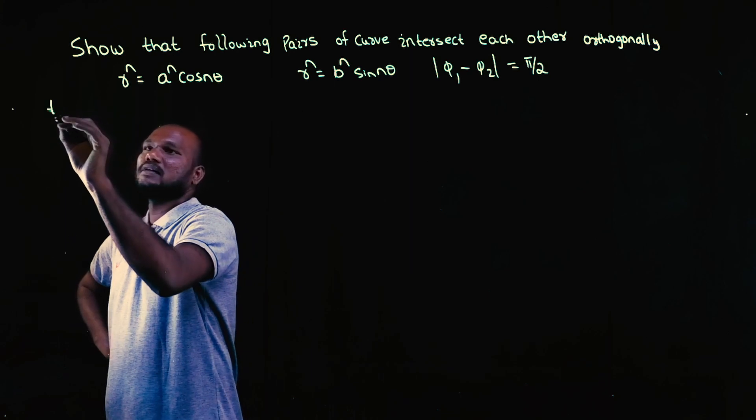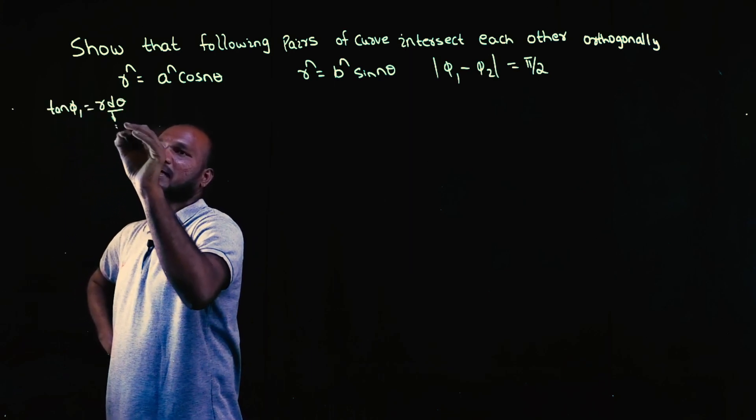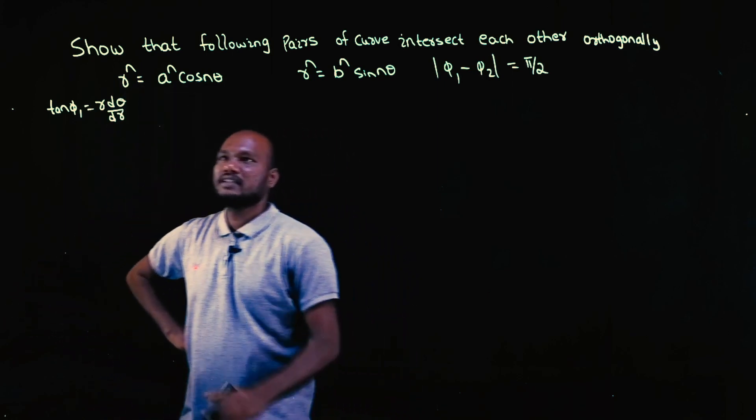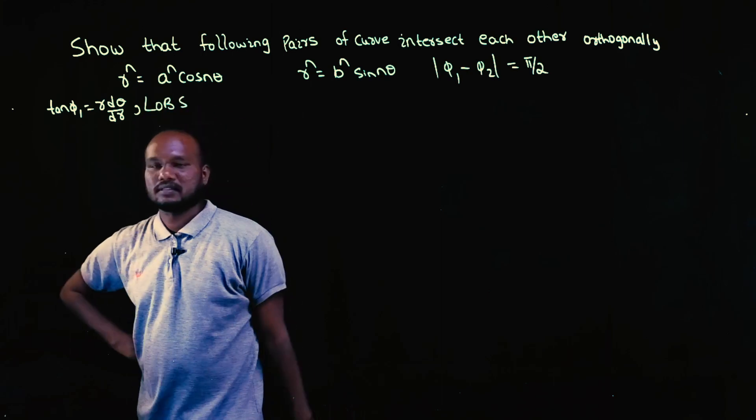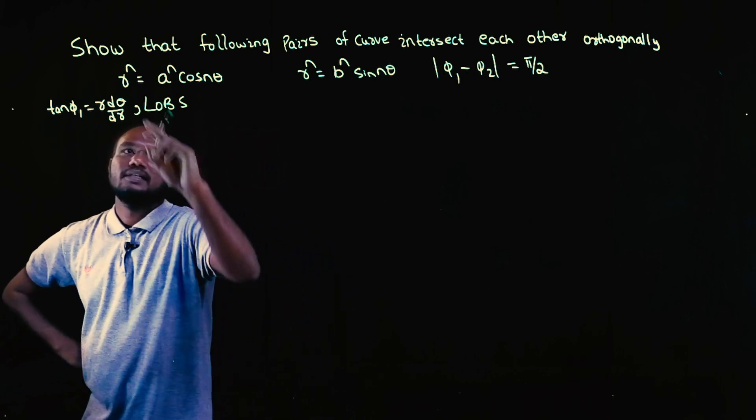What is the formula? Tan phi 1 is equal to r into d theta by dr. R directly is not given. Whenever r is not directly given, what we need to do? L.O.B.S - that is log on both side. So let's take log.